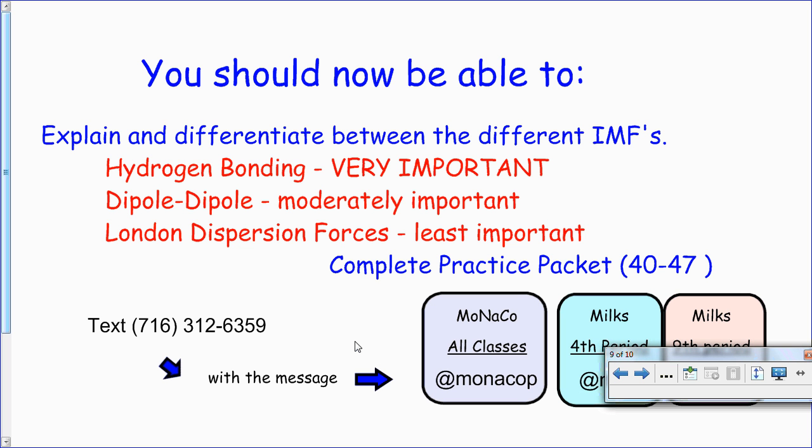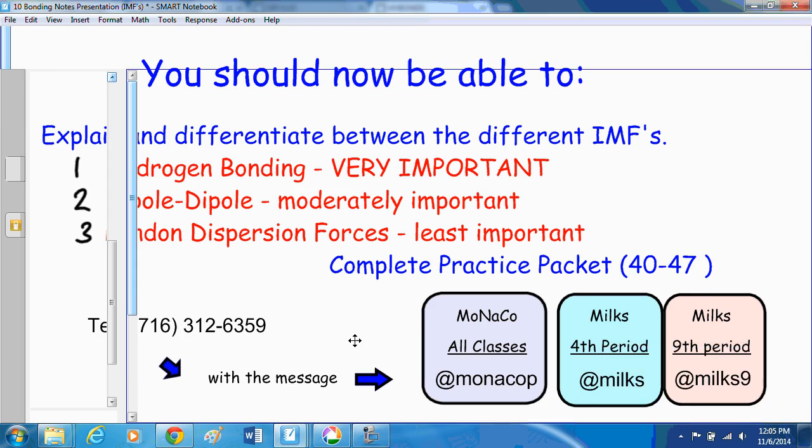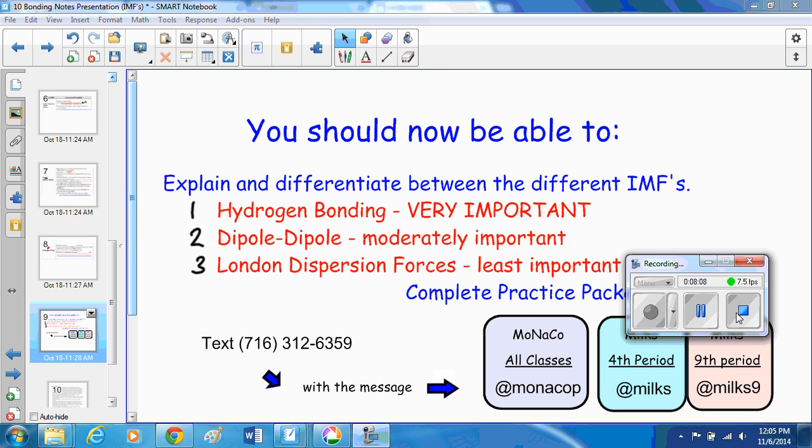At this point, you should have a basic understanding of intermolecular forces — how it's a force of attraction between two molecules but not actually a bond. Hydrogen bonding is very important and the strongest of the forces. Dipole-dipole interaction is moderately important and explains why things are soluble. London dispersion forces are the least important. Ranking these in strength: one, two, three — and their strength corresponds to their importance. Thanks for watching; I hope you understand a little bit more about intermolecular forces.